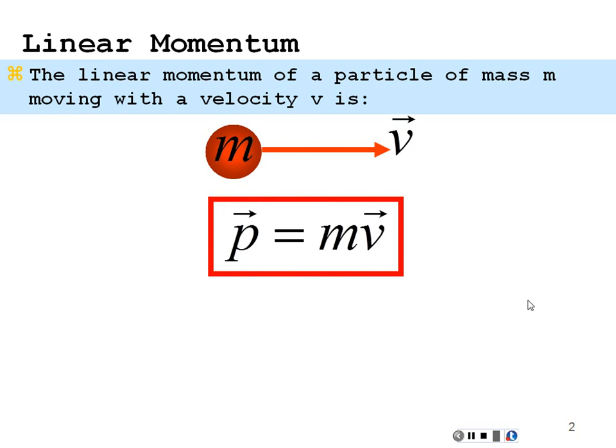We designate momentum by P. Why P? It's kind of the next letter available in the alphabet. M is already taken by mass, N is the normal force, O is the origin of a coordinate system, and then you get P — we hadn't used small p for anything yet, so we use it for momentum.